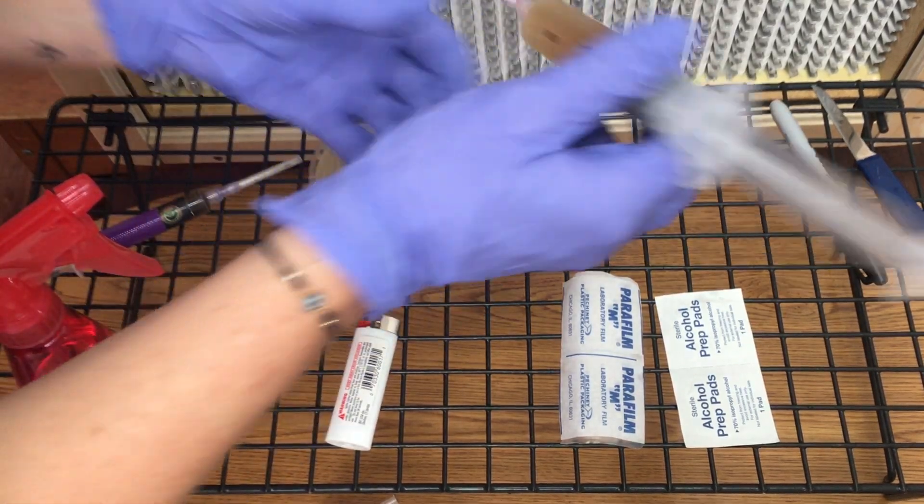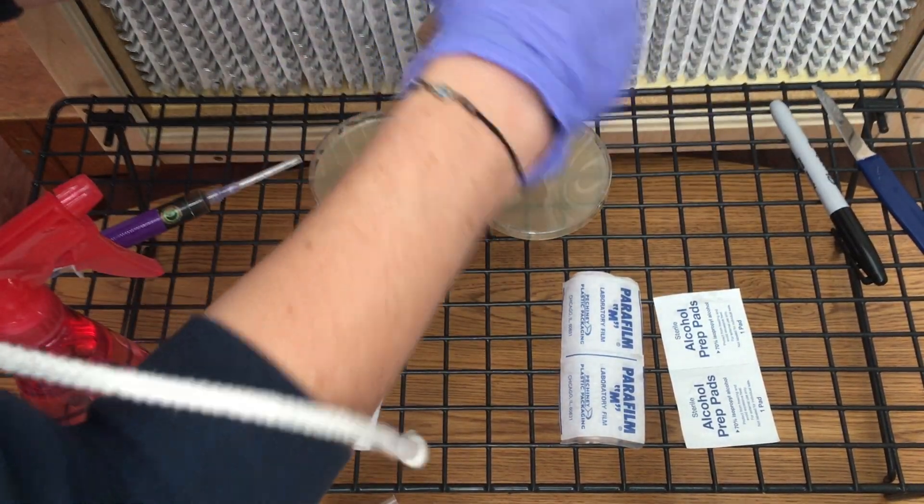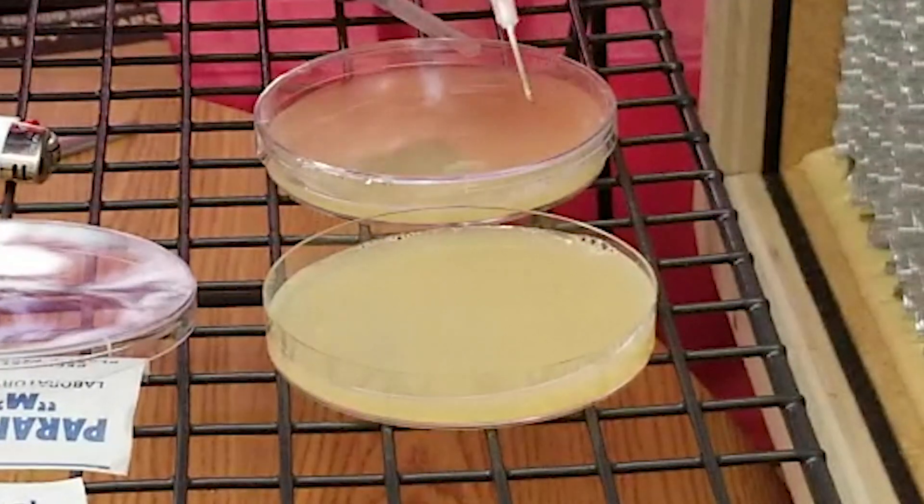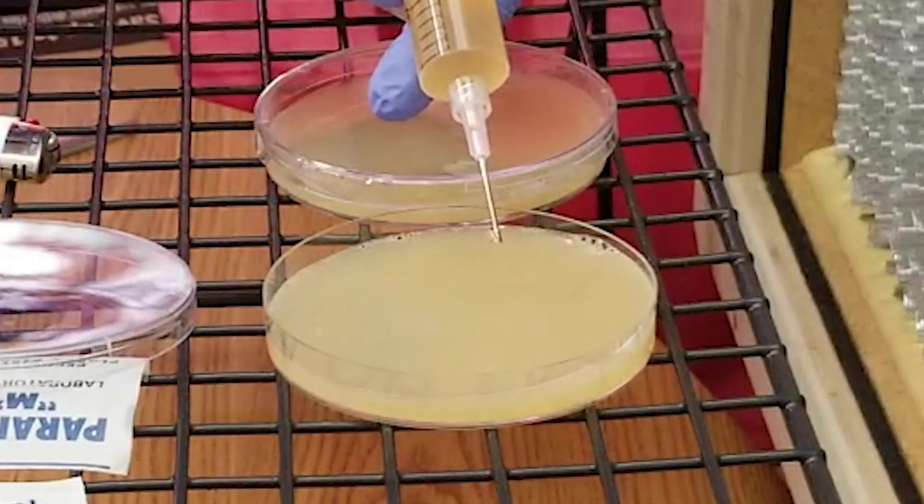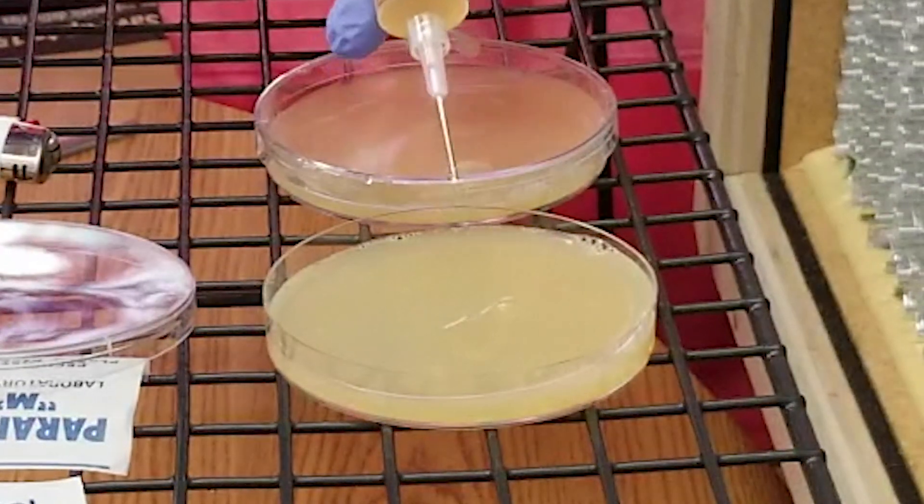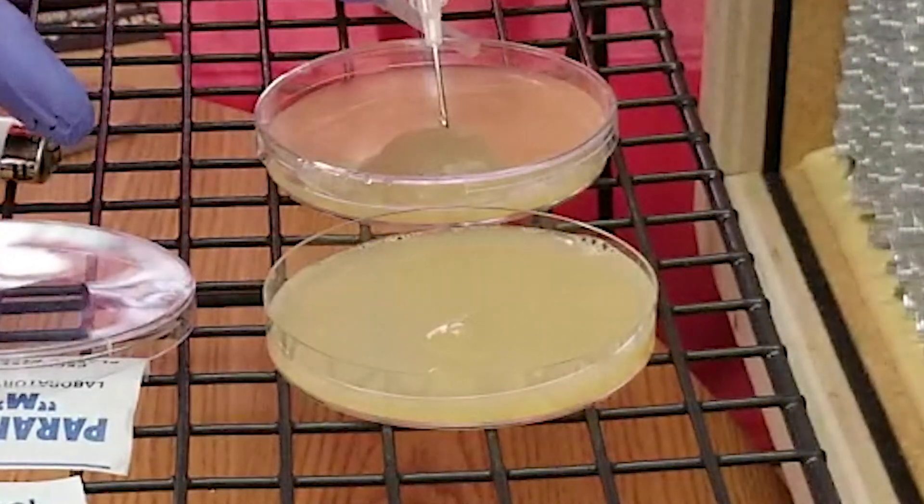Shake the syringe one last time and inoculate your agar by squirting a few drops of liquid spores onto the agar. Like I said, you don't need that much, just a few drops will do and they will spread to the whole entire agar tray.